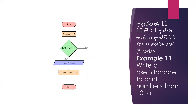Pseudocode is another way to represent algorithms, and we've been converting flowcharts into pseudocode. We discussed how to convert pseudocode to print numbers from 10 to 1. We start and then set the variable number to 10 because we'll start with printing 10.